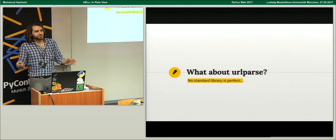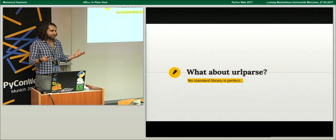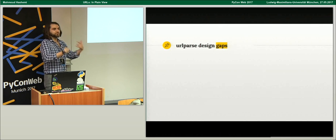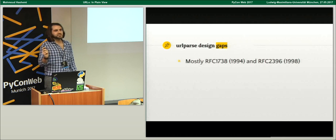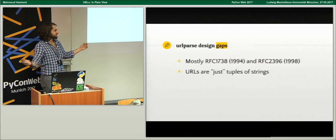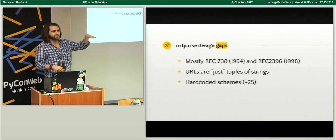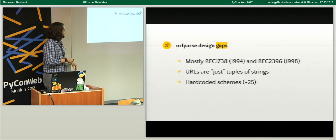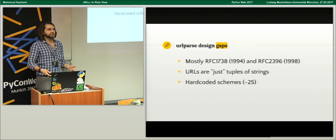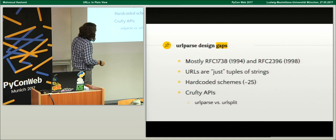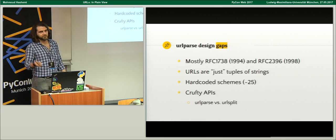How are Python URLs used in practice? We have the urllib.parse module in the standard library, but it's not perfect. It's mostly based on RFC 1738 from 1994 and RFC 3961 from 1998, and it says itself it's not RFC 3986 compatible — it's not even of this millennium. URLs are just tuples of strings, which will eventually cause an escaping issue. It also has hard-coded schemes, so the semantics it understands are limited with no way to extend that. And it has crufty APIs — there's urlparse versus urlsplit, and I bet you can't tell me the difference off the top of your head.